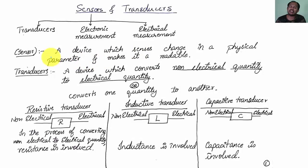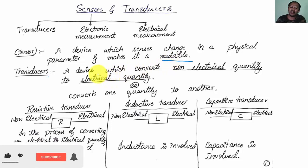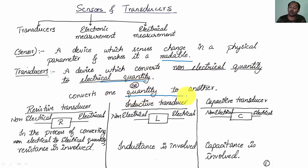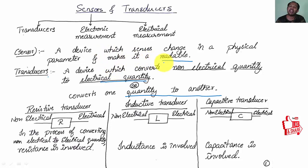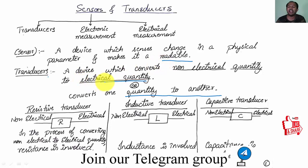Let us discuss what is the difference between a sensor and a transducer. A sensor is a device which senses changes in physical parameters and makes it a readable one — examples include oxygen sensor and fuel monitoring sensor. A transducer is a device which converts a non-electrical quantity to an electrical quantity, or converts from one quantity to another. In the case of a sensor, the output is readable in analog or digital format, but in the case of a transducer, the output must be in electrical quantity only — basically voltage or current.